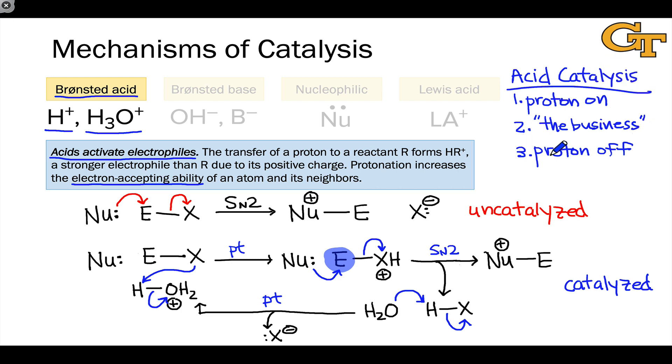This template or dance of three elementary steps is key to all Bronsted acid catalyzed reactions. Proton on, do the business, proton off. In acid catalyzed mechanisms in which there are multiple business elementary steps, each business step is bookended, if you will, by proton transfers like this. And so this is a very important general paradigm to keep in mind for acid catalysis.